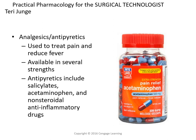Next are analgesics and antipyretics. Analgesics are used to eliminate or reduce pain, and antipyretics are used to reduce or eliminate fever. Often one drug handles both. There are several strengths — over-the-counter, prescription, and narcotics. There are three categories: salicylates, which are aspirins; acetaminophen; and NSAIDs, or non-steroidal anti-inflammatory drugs. Other terms used to describe these medications are febrifuge, antithermic, and antifebrile.